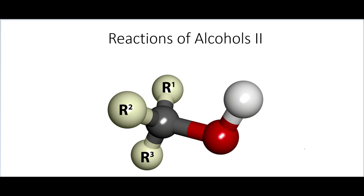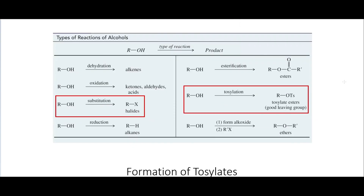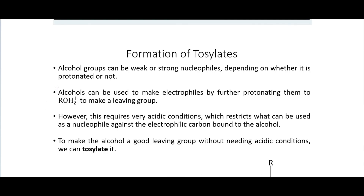In this video I am going to continue discussing the reactions of alcohols. In particular I am going to first discuss the tosylation of alcohols, which makes a good leaving group, and substitution using halogens — several different ways that we can turn an alcohol into a halogen.